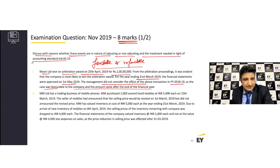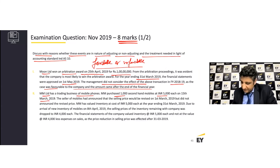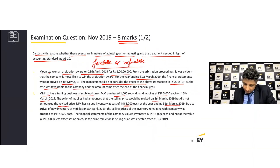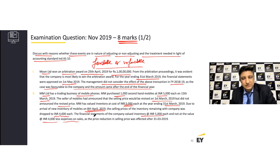The second scenario: MM Limited has a trading business in mobile phones. It purchased 1,000 second-hand mobile phones at rupees 5,000 each on 15th March 2019. The seller had announced that the selling price would be revised on 1st March 2019 but did not announce the revised price. The company valued inventory at rupees 5,000 each. However, on 8th April new inventory arrived, which actually dropped the net realizable value of the existing inventory to rupees 4,000 each. The financial statements valued inventory at 5,000, not 4,000, on the ground that the selling price reduction was effected after 31st March 2019.